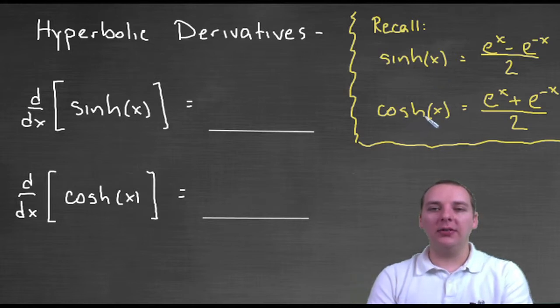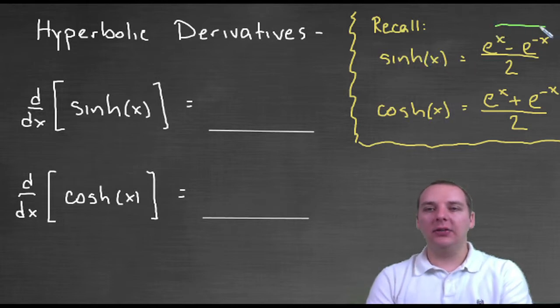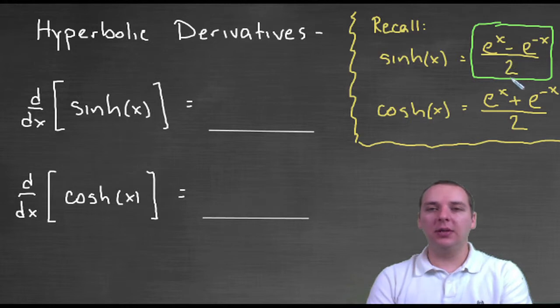And hyperbolic cosine was the same thing but with a plus sign instead of a minus sign. So, just think about this for a minute here. If you're trying to take its derivative, that really is in effect like trying to take this derivative. So how would you take the derivative of something like this?